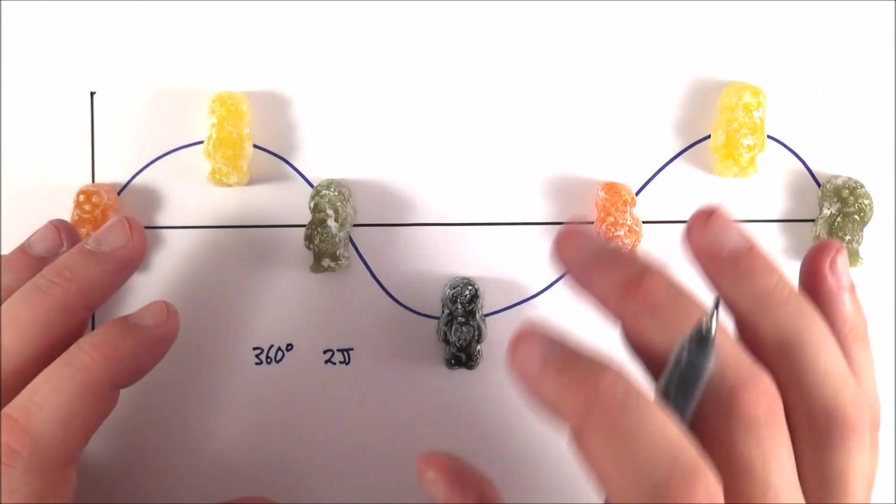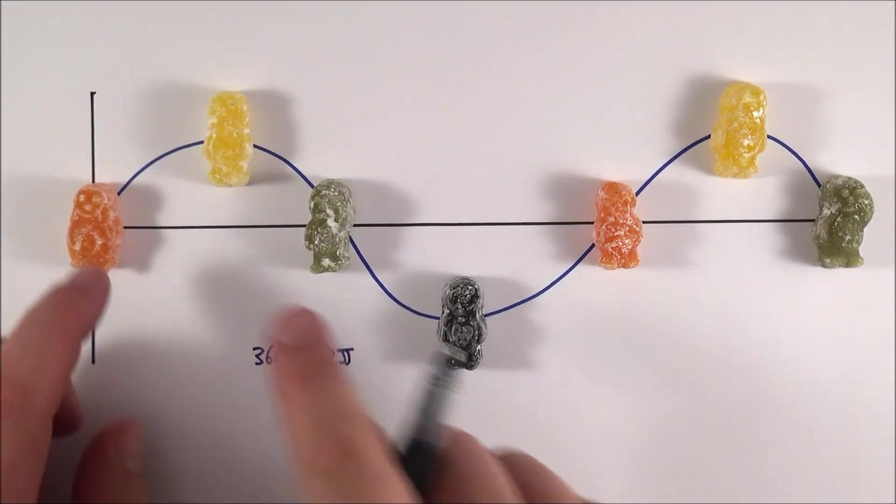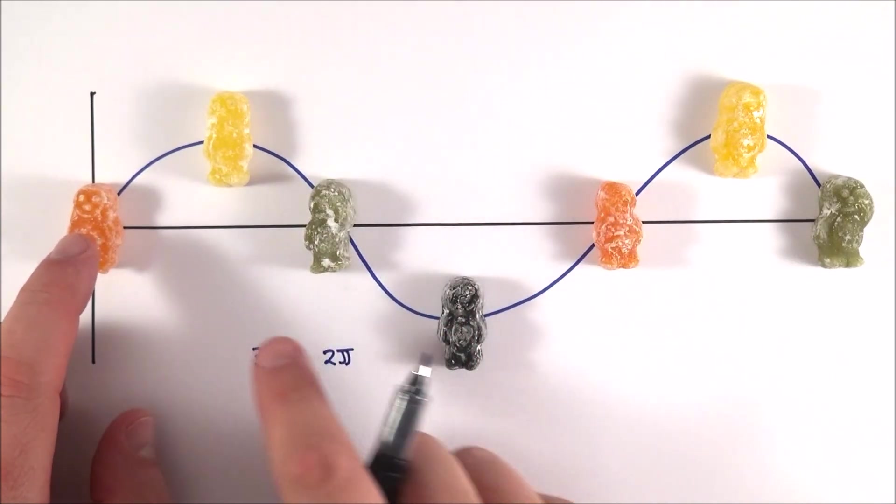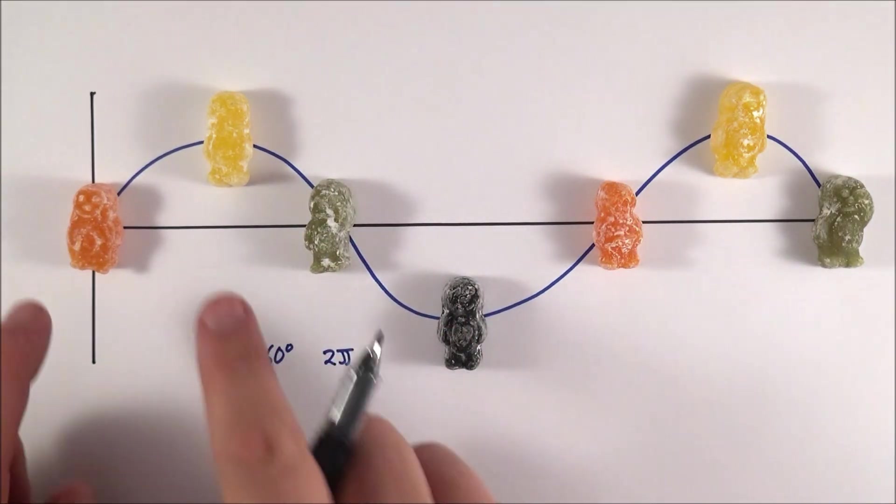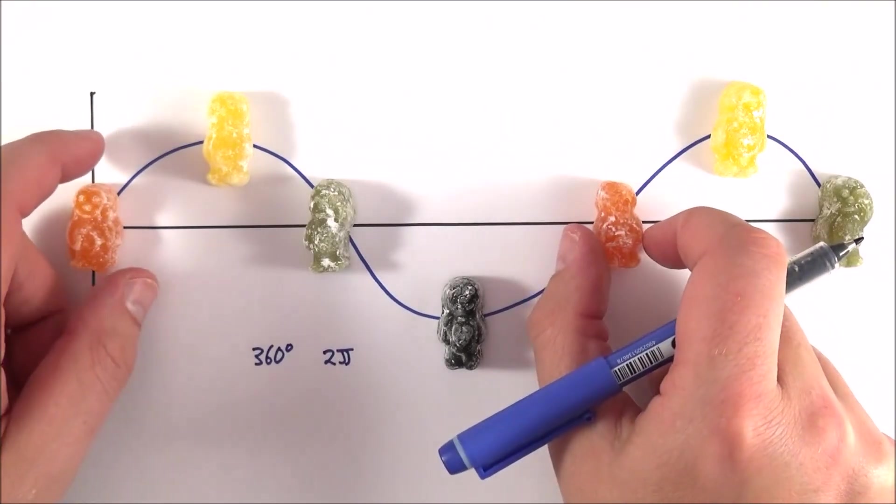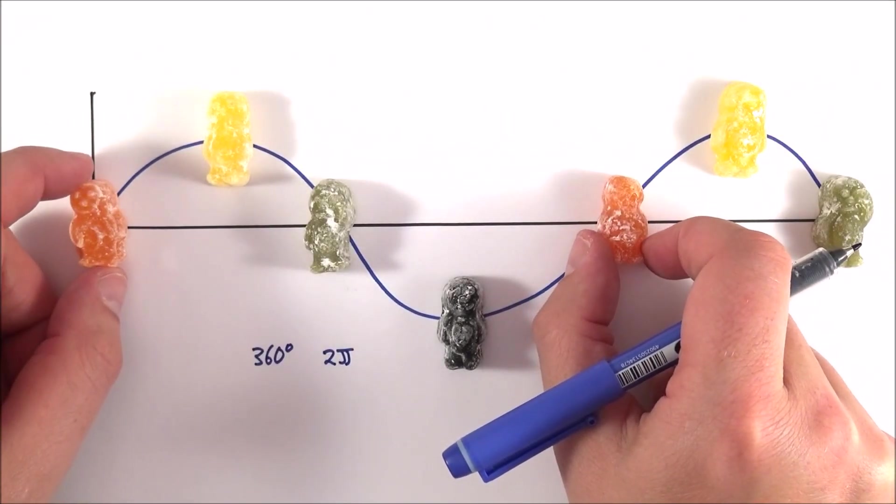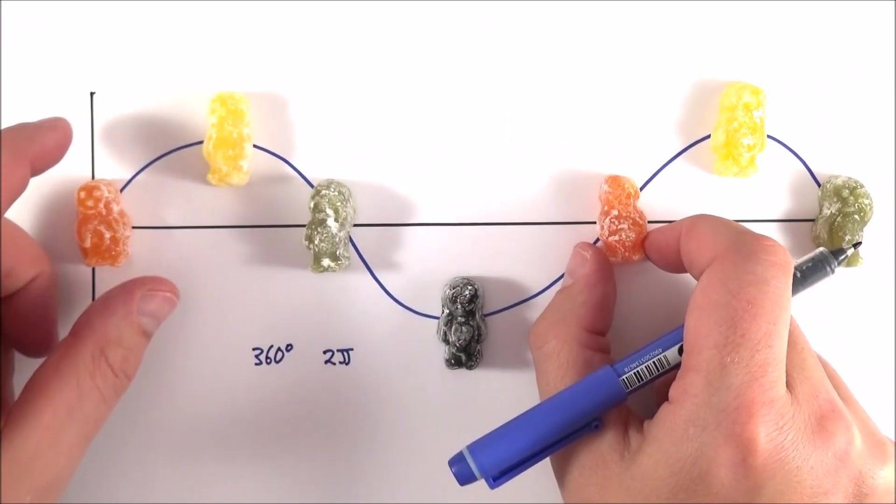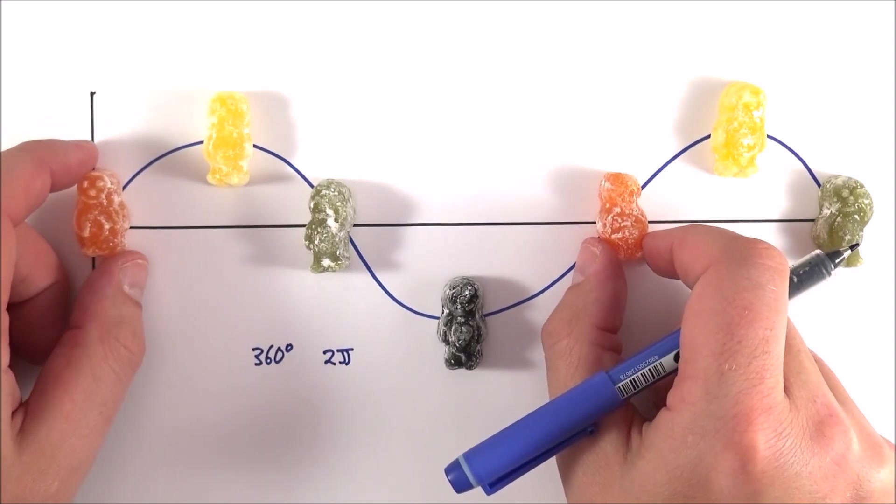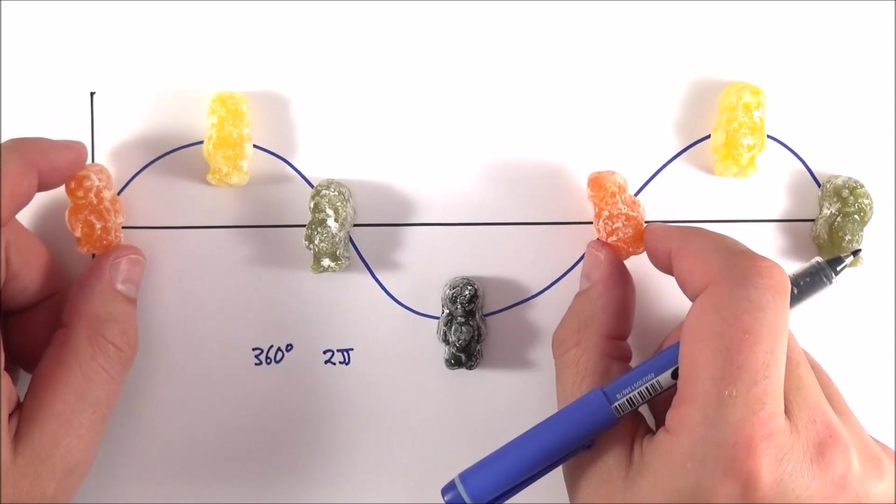Here is a wave made out of jelly babies. Again, one complete wave cycle is equal to 360 degrees or 2π radians. That means that these two jelly babies here, because they're one wavelength apart, and again this is just one wave we're looking at, they're one wavelength apart, which means that there's no phase difference between them.